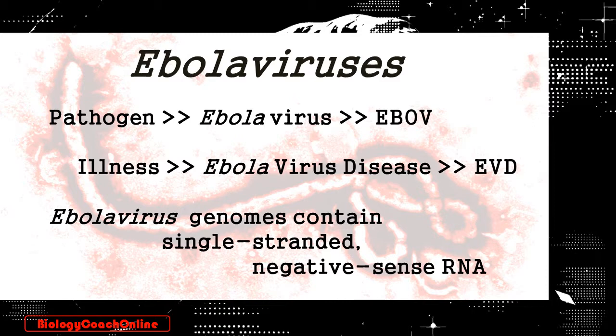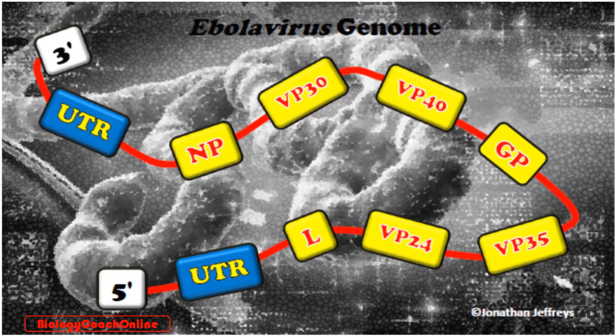EBOV is a specific variant within the Ebola virus taxonomic group, which contains single-stranded, non-infectious RNA genomes. There are only seven genes in the Ebola virus genome. The L gene codes for viral RNA polymerase, and that is really the key to turning on the replication process of the virus.